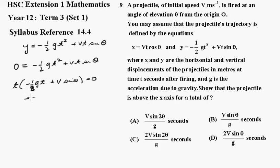So we can say that minus a half gt plus V sin θ equals 0. A half gt equals V sin θ. So t is equal to 2V sin θ all over g. And 2V sin θ all over g is D.